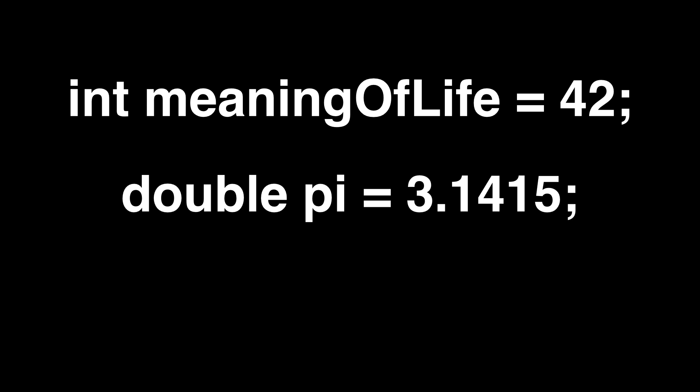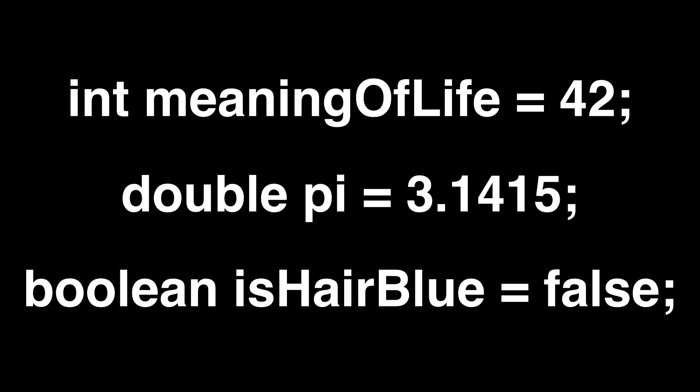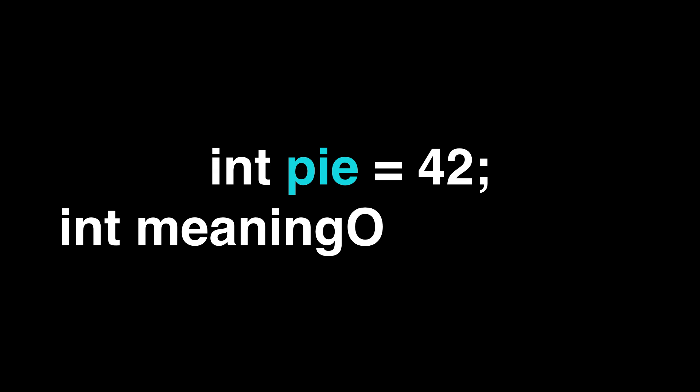As we saw in previous lessons, you can initialize your variable to a value like this. This is optional — you can provide a value later, but you should never use a variable until you know that you have initialized it. For most cases, a variable will be initialized to zero automatically. In some cases, which we'll cover later, it's an error to use the variable before initializing it. If you know the value when you're creating your variable, go ahead and add it. You can also set a variable to the value of another variable.